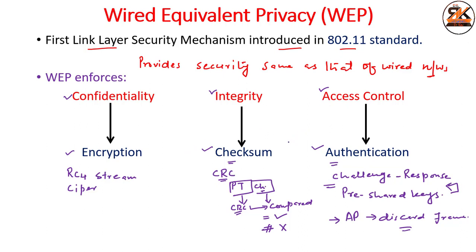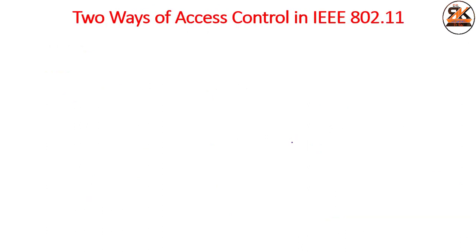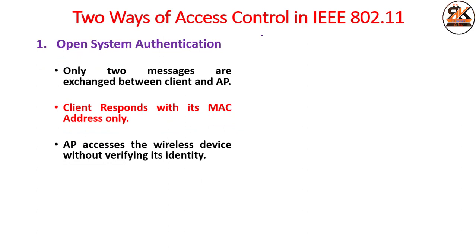There are two ways of access control in IEEE 802.11. The first is open system authentication, where only two messages are exchanged between the client and the access point. The client does not need any password, PIN, or authentication mechanism. The access point sends a router advertisement and the client responds with only its MAC address, similar to connecting to an open access point without any key or password.